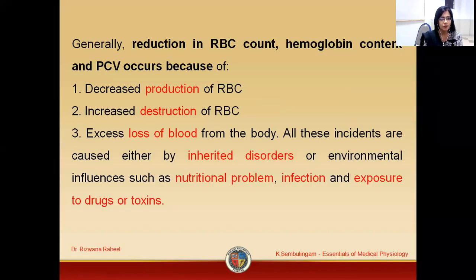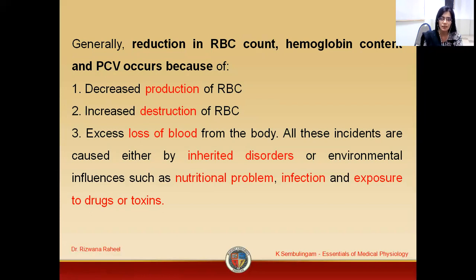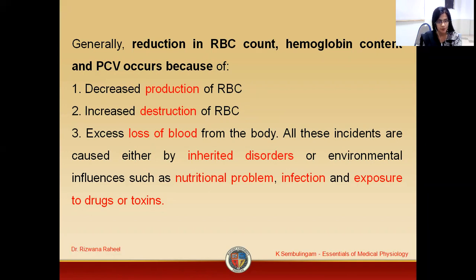What are the reasons behind this reduction in RBC count, hemoglobin content, and PCV? This is because of decreased production of RBCs, or possibly due to increased destruction of RBCs, and a third reason is loss of red blood cells possibly due to hemorrhage. Other reasons may be inherited disorders or environmental influences such as nutritional problems, infections, and exposure to drugs or toxins.